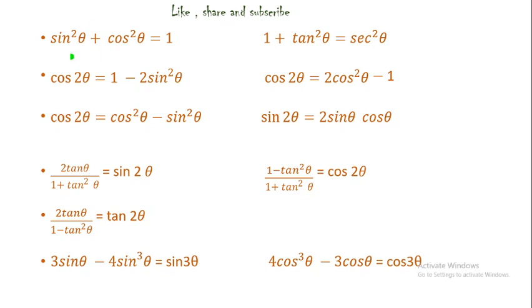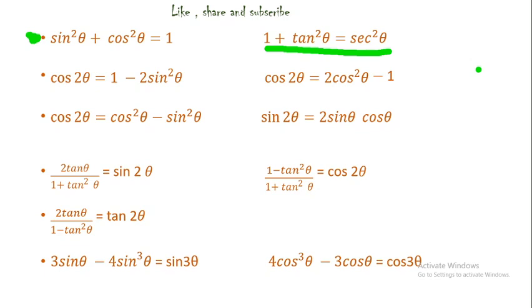The first formula is very easy, which you have already done in previous standard. The formula is sin²θ + cos²θ = 1. Then you have 1 + tan²θ = sec²θ. This is also done in previous standard. So these two are very very easy — you all know them.